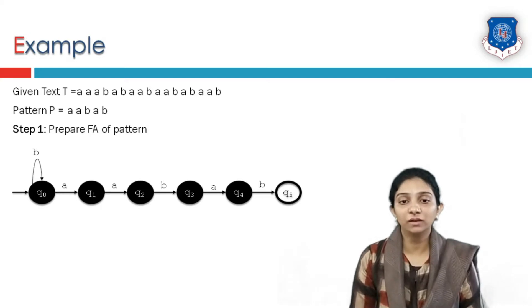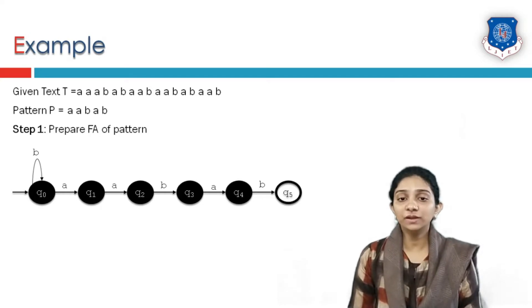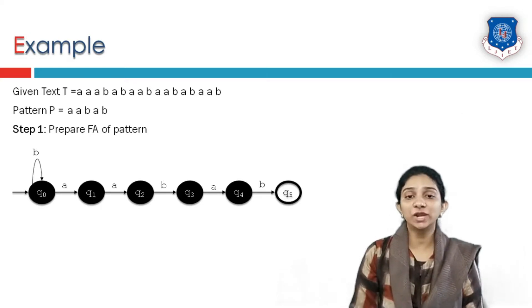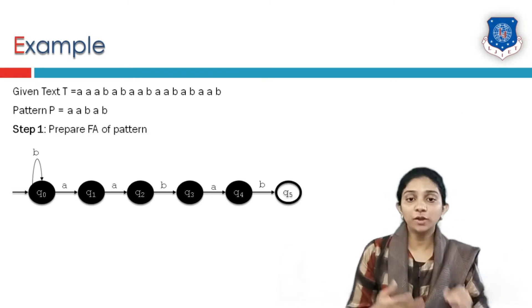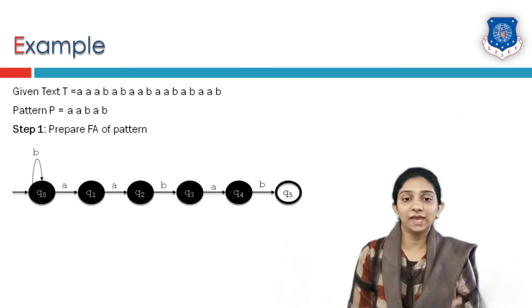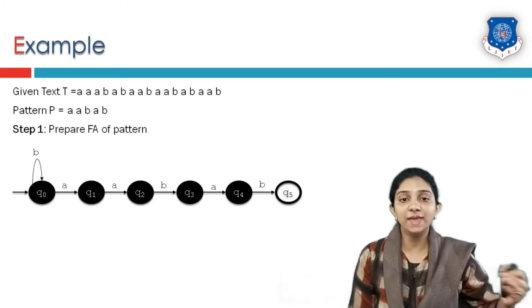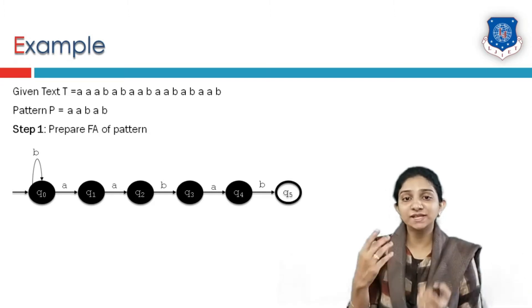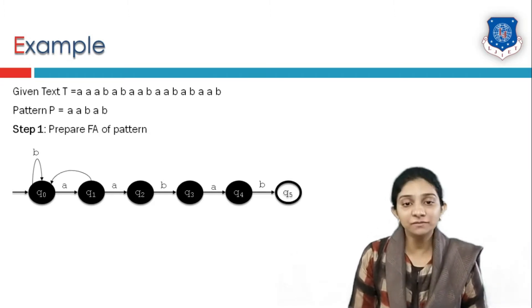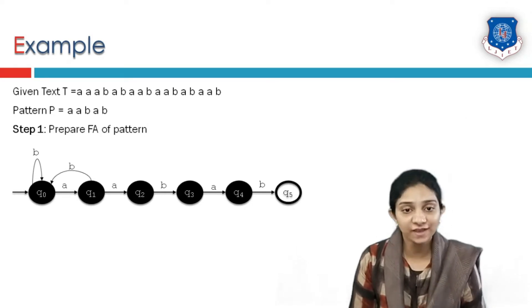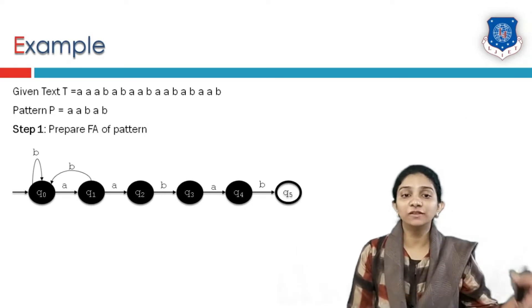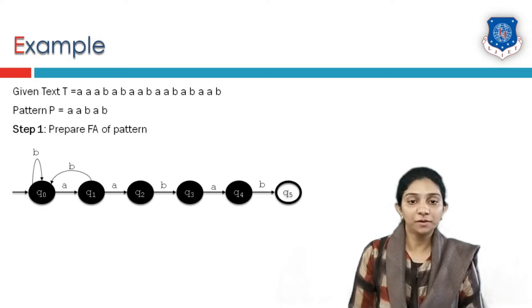Now take q1. At q1, input symbol A leads to q2. But what about B? If the pattern starts like ABB or ABA, it is not matching our pattern. We have to start pattern matching from the very first character, so B leads back to state q0.